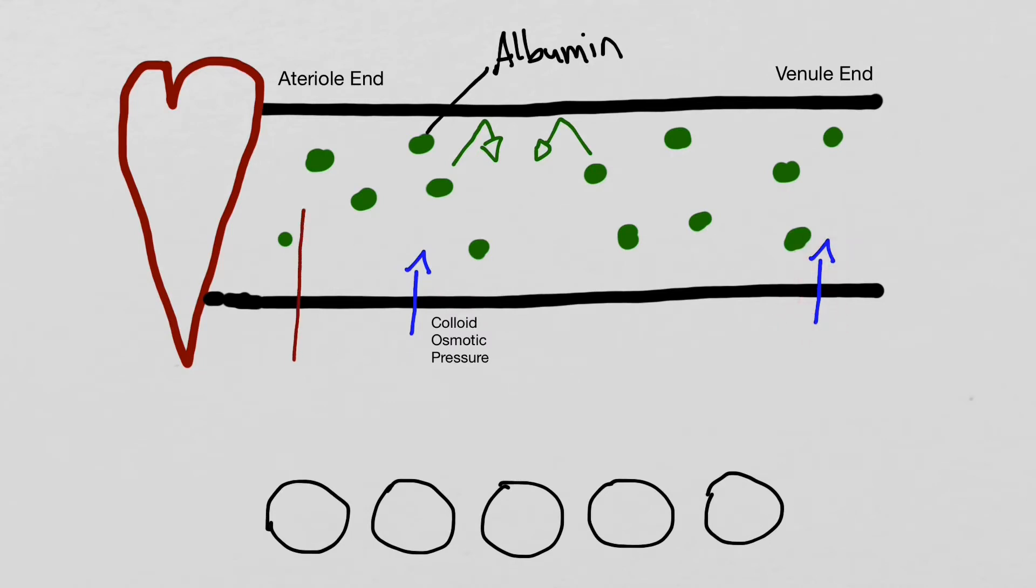Another pressure found at the capillaries is called capillary hydrostatic pressure. This pressure is the fluid trying to get out of the capillary into the interstitial space. This pressure is stronger at the arterial end as it is closer to the heart.